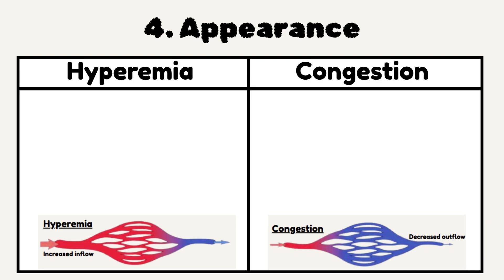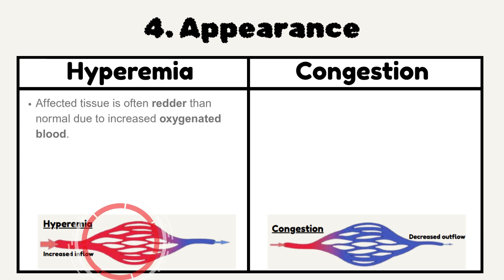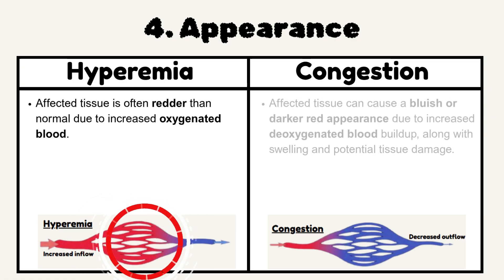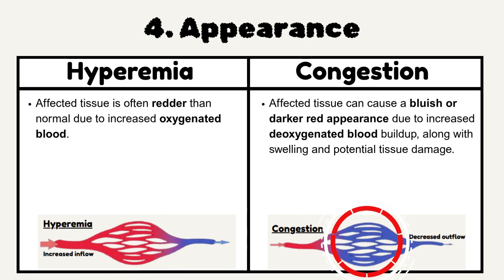Number 4: Appearance. In hyperemia, the affected tissue is often redder than normal due to increased oxygenated blood. In congestion, the affected tissue can show a bluish or darker red appearance due to increased deoxygenated blood buildup, along with swelling and potential tissue damage.